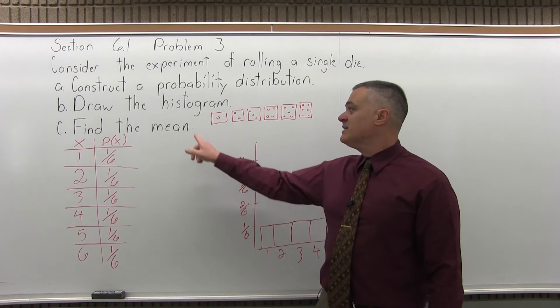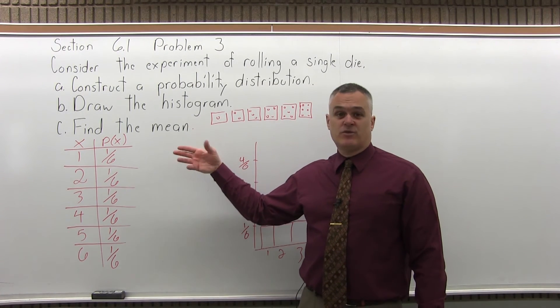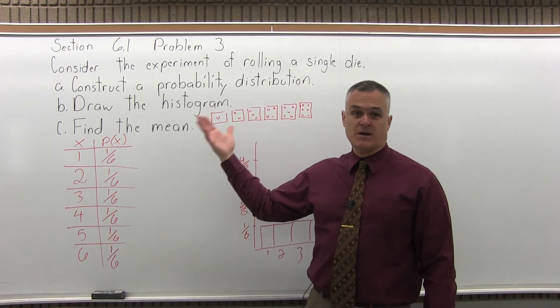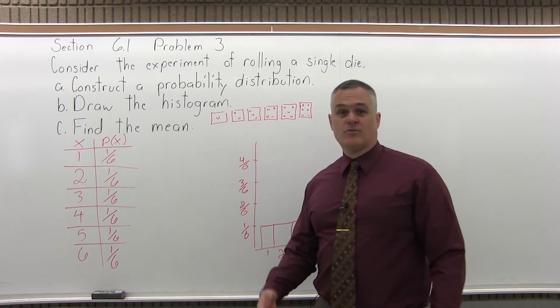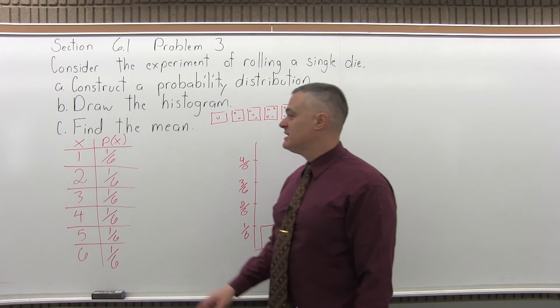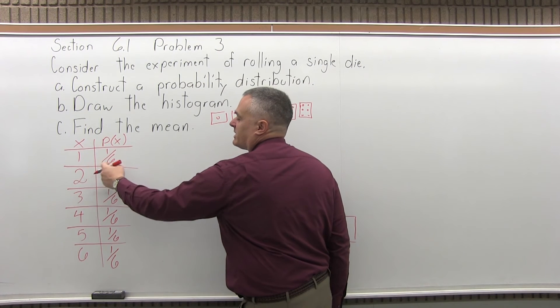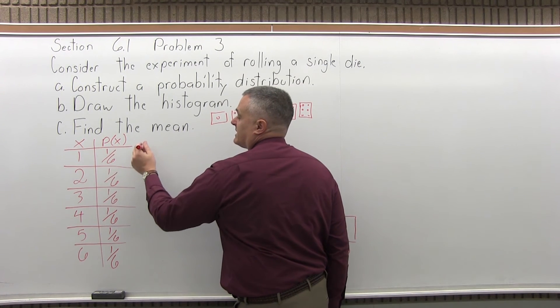And then C, find the mean. So the mean, the average value, if you roll that single die millions of times, take the results, add them up, divide by the millions of rolls, what would it be? Well, you could roll the die millions of times and do that math, which would give you the right answer, but it'd be too tedious. The other way to get the same answer is multiply everything in the first column times its probability and add those results together.